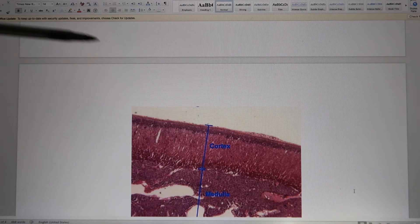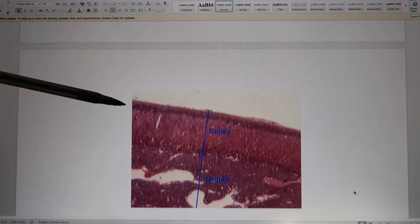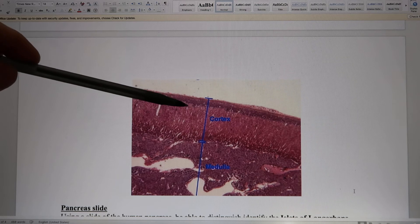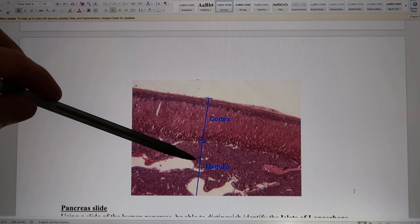So structurally, they are very different. So if I give you this slide, ask you identify the adrenal gland, and you only have two answers, either the adrenal cortex or adrenal medulla.